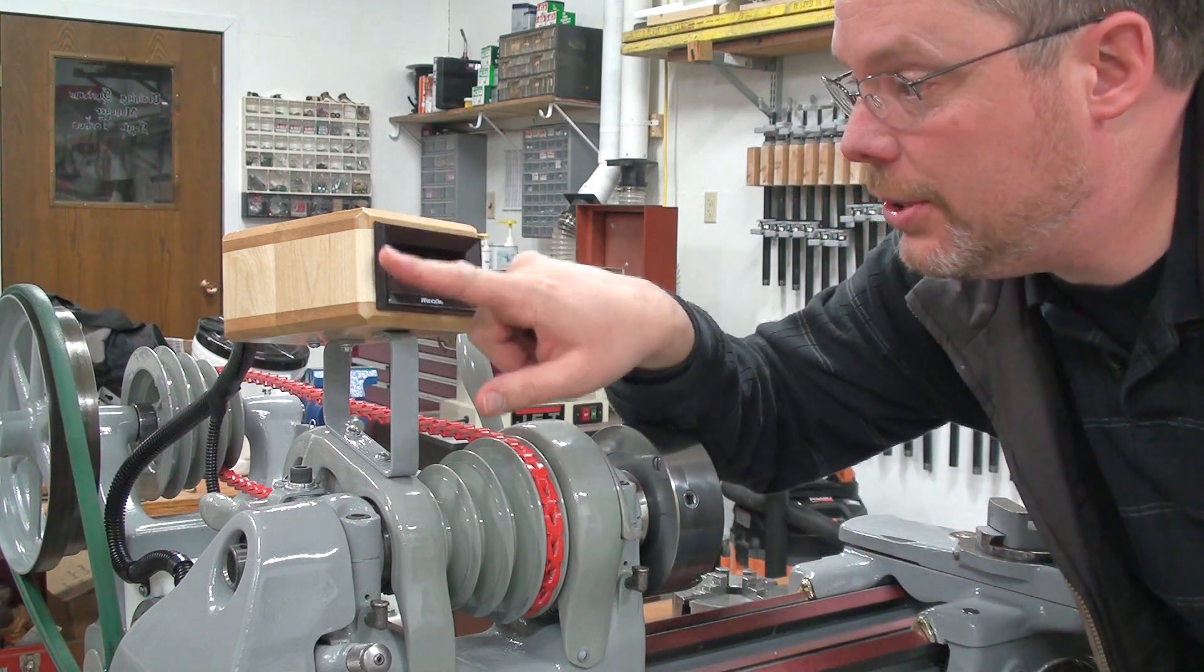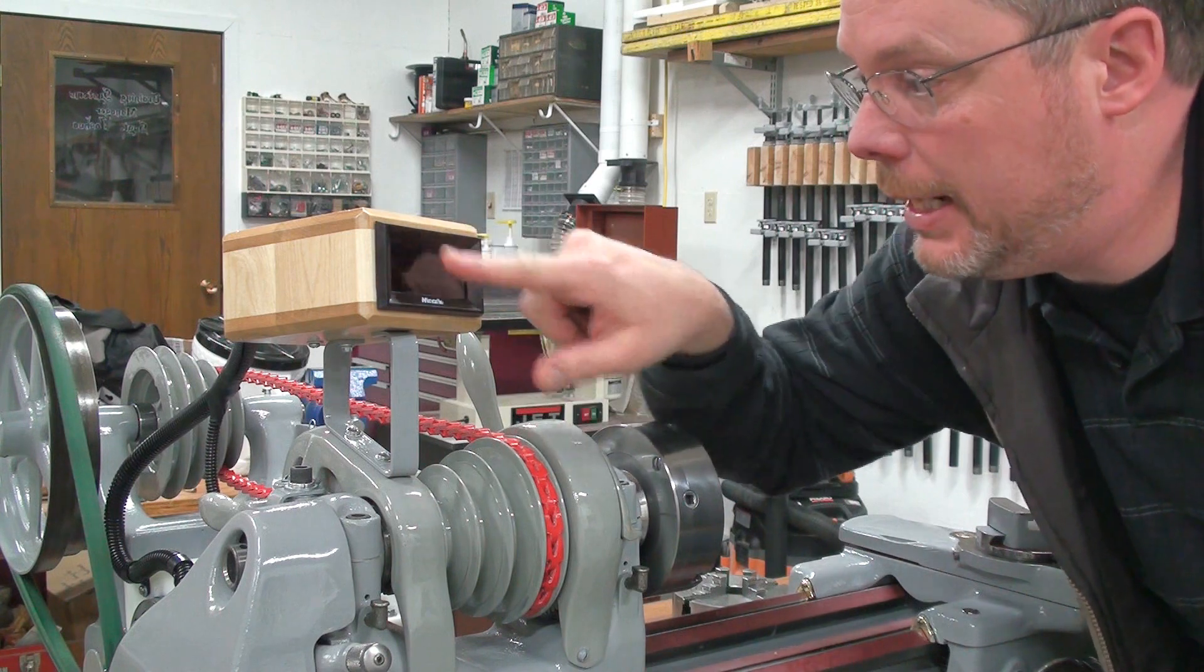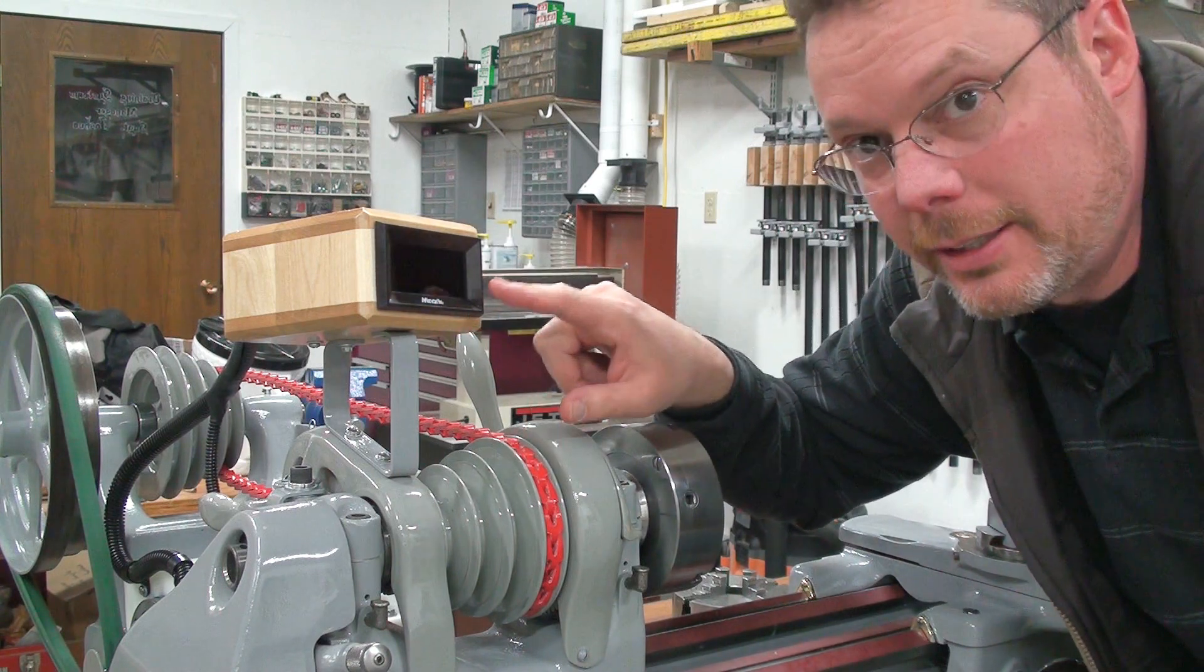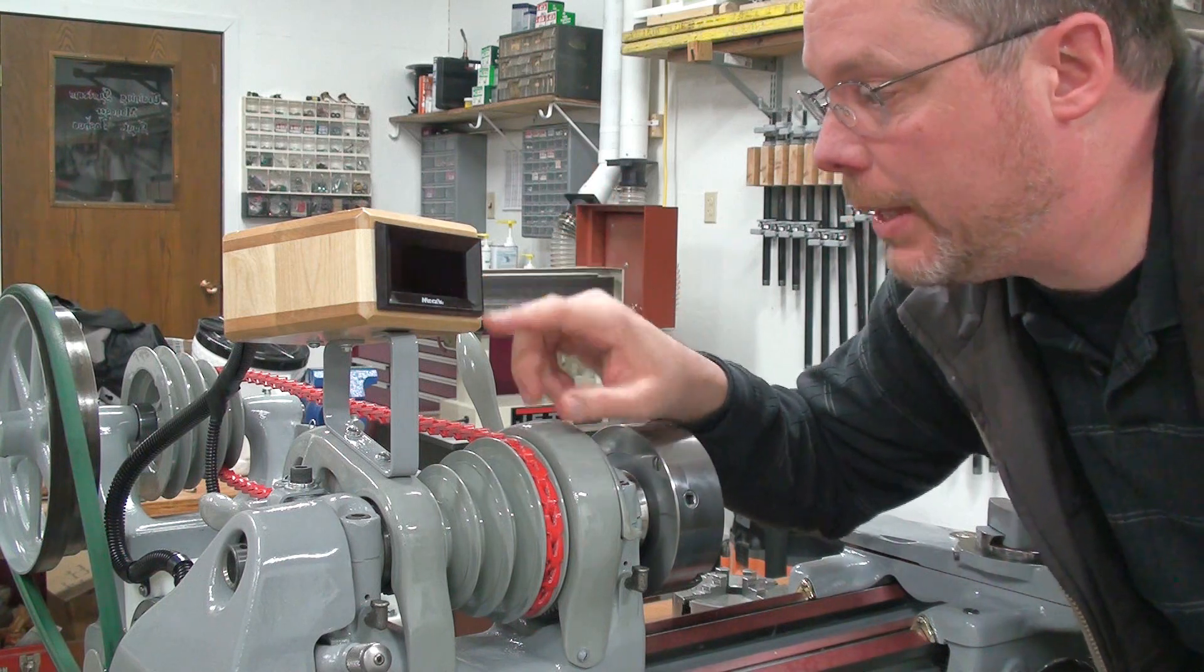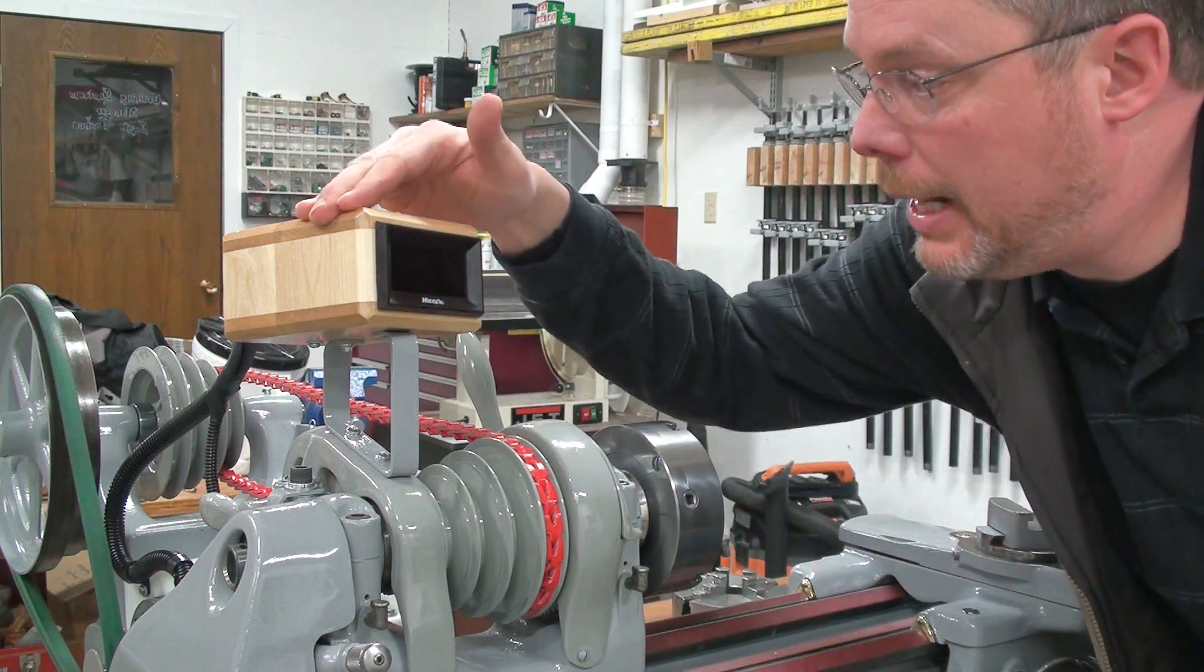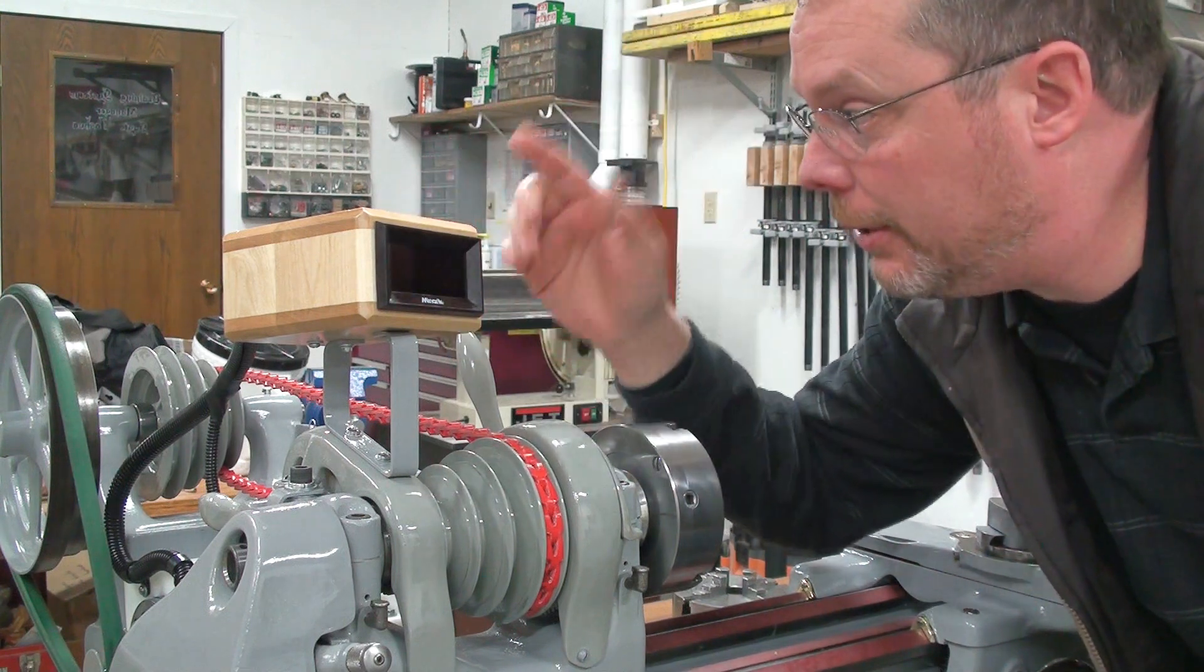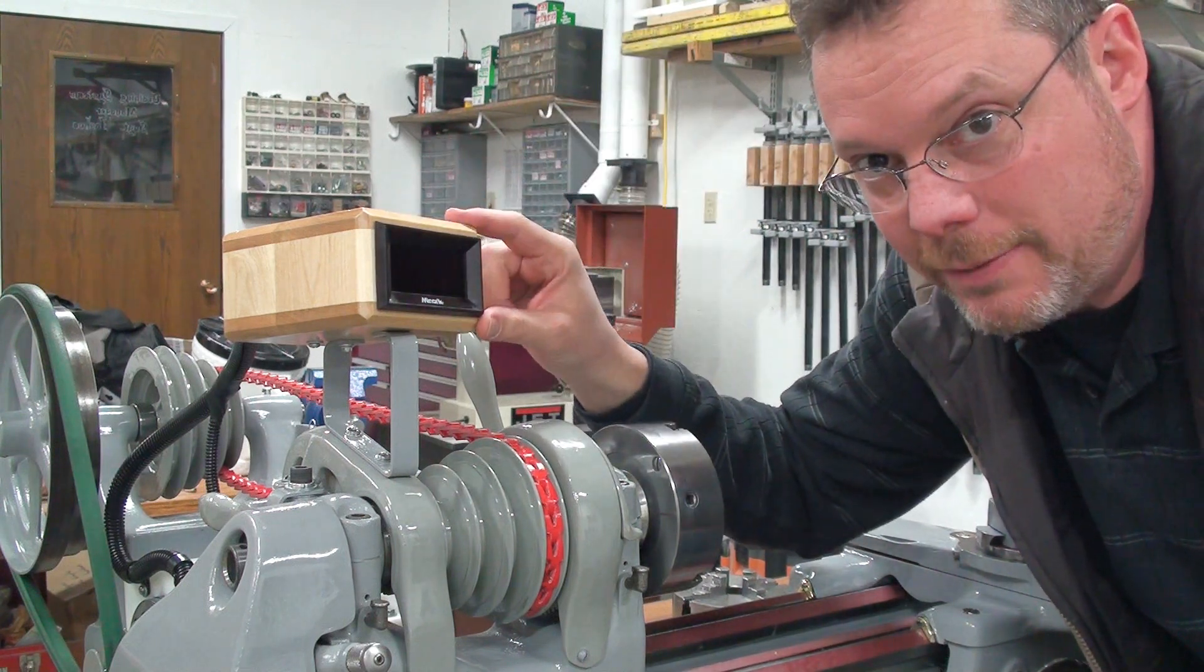I bought this unit right here off of eBay. This is a Mineric. There's many different kinds of tachometers to use. I just picked this one because it was a good price at the time. And I built this wooden box to contain it. I could have made one out of metal, but I've got plenty of wood around here. This was a lot cheaper and faster for me.